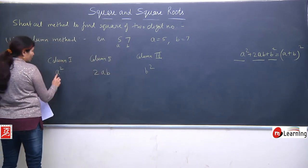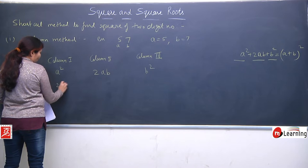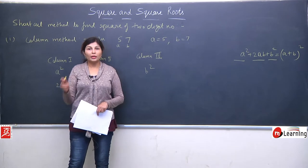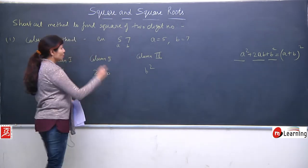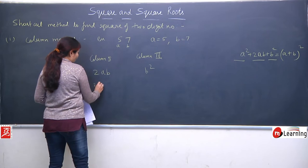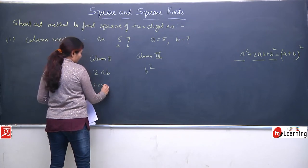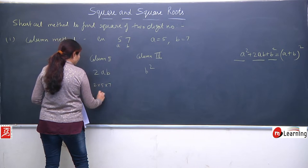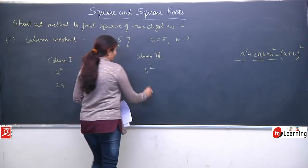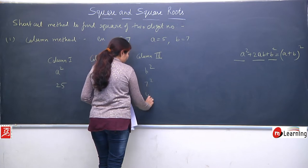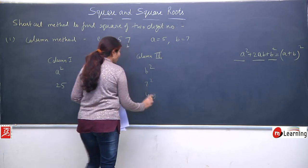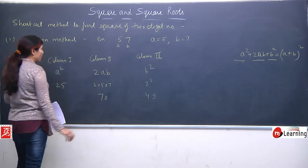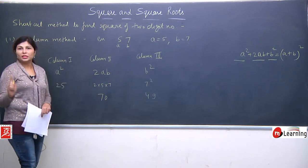a is 5, so a² = 25. For 2ab: a=5, b=7, so 2×5×7 = 70. And b² = 7² = 49. It's a very easy method — the first time it might feel a little strange, but it's very easy to find the square of two-digit numbers.